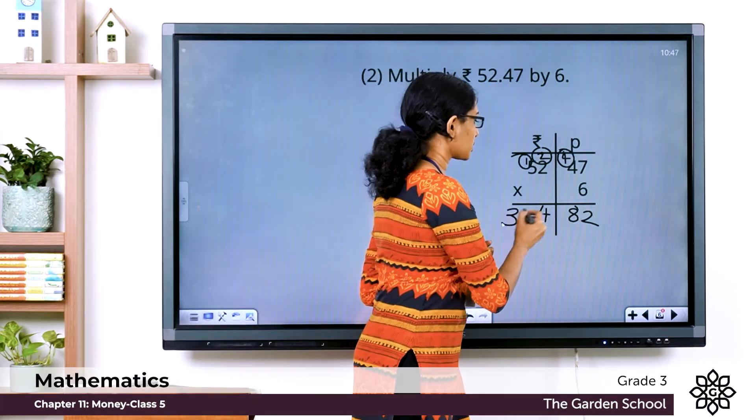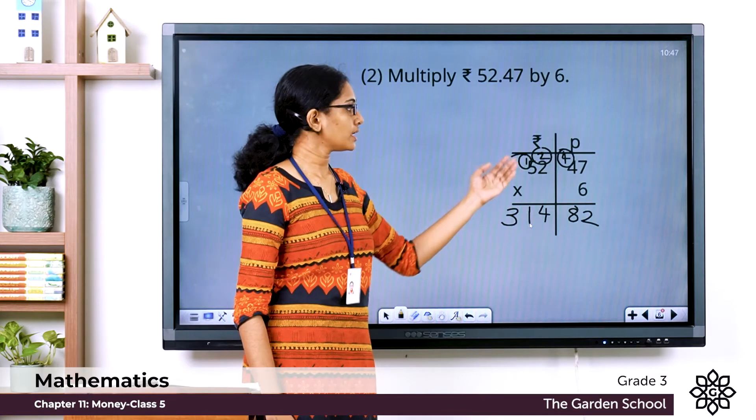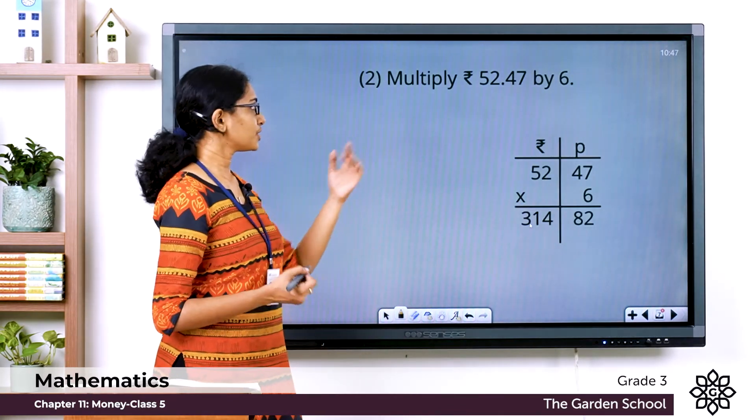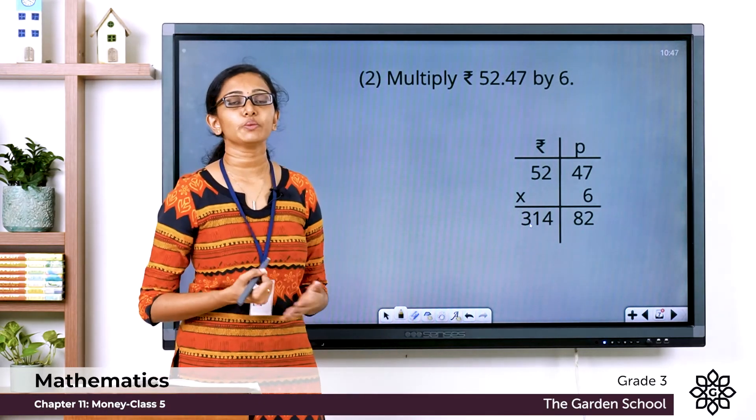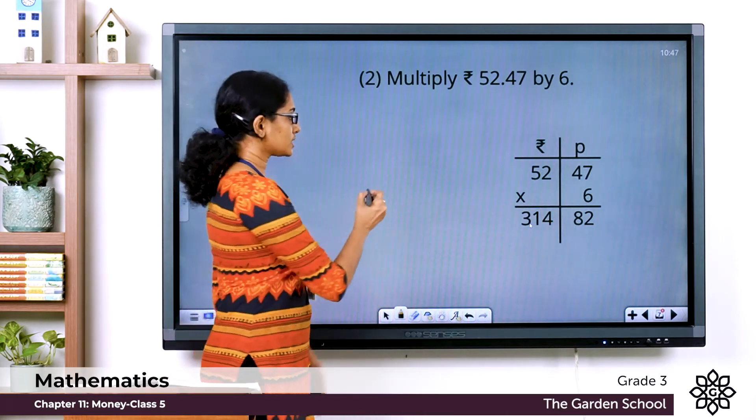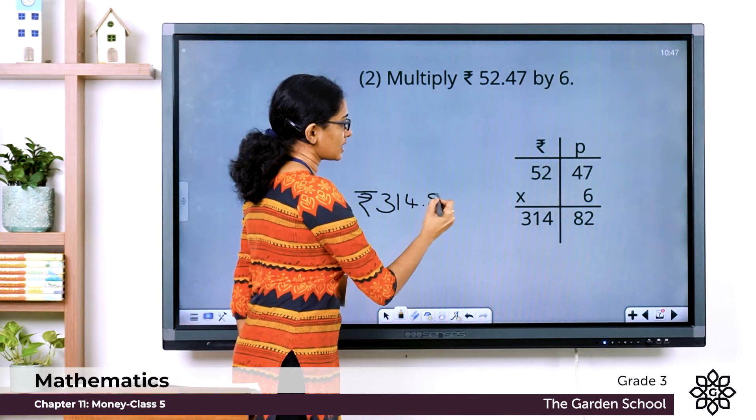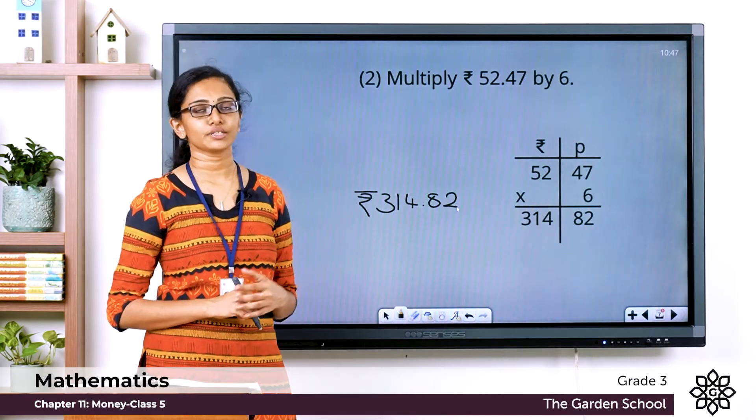What is the total amount? It is equal to 314 rupee 82 paisae. So the amount 52 rupee 47 paisae when multiplied by 6 will give you the total amount rupees 314 and 82 paisae. I hope these two questions are clear to you.